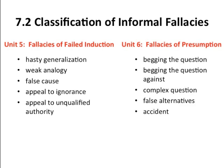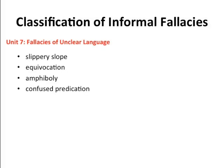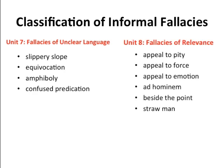In Unit 6, we'll be looking at begging the question, begging the question against, complex question, false alternatives, and accident. In Unit 7, we'll be studying the fallacies of unclear language, which include slippery slope, equivocation, amphiboly, and confused predication. And in Unit 8, we'll look at fallacies of relevance, including appeal to pity, appeal to force, appeal to emotion, ad hominem, beside the point, and straw man.